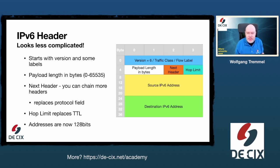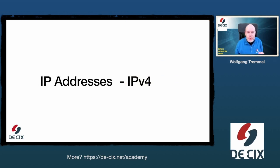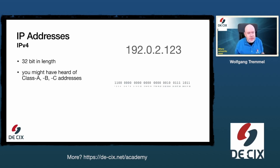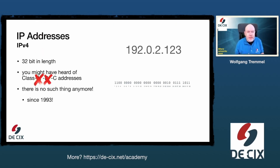Let's talk about IP addresses, starting with IPv4 since you are probably already familiar with them. IPv4 addresses are 32 bits in length — written as four decimal numbers separated by dots. Talking about classful addresses: you might have heard of class A, B, and C addresses. Please forget about that — there are no class addresses anymore, and this has been the case since 1993. If you hear somebody talking about a class C address, tell them it doesn't exist and perhaps that person should retire. All usable IP addresses are equal.